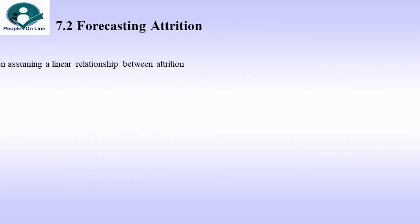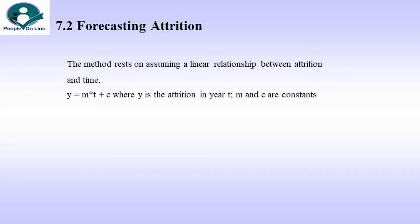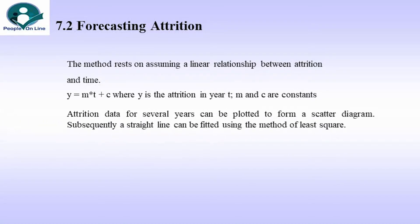Forecasting Attrition. The method rests on assuming a linear relationship between attrition and time. So we could come up with a progression equation y = m × t + c, where y is the attrition in year t, and m and c are constants. Attrition data for several years can be plotted to form a scatter diagram, and subsequently a straight line can be fitted using the method of least-squares.